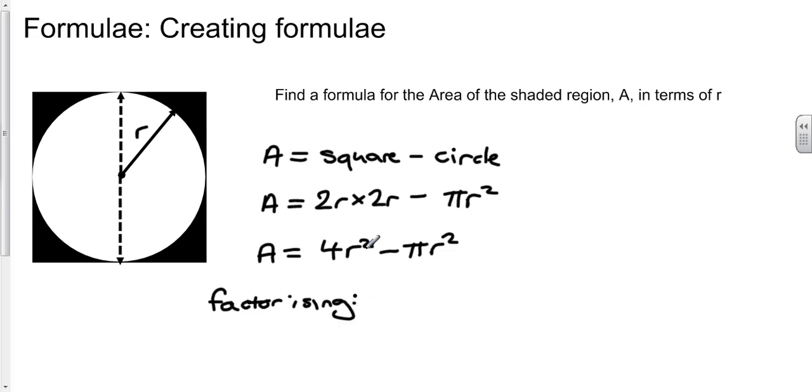Factorizing means finding something that appears in both terms, and in fact r squared appears in both terms. What we've done is we've taken a factor of r squared away from 4 and we've taken a factor of r squared away from negative pi. So the formula can also be written in a factorized form.